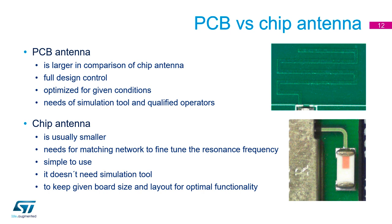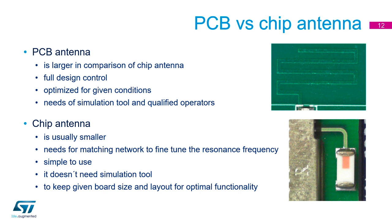Now we will discuss the possibilities in antennas — it is an often neglected component, although one of the most important. For PCB antennas, we mean dipole or F antennas, not those that require a ground plane under patch elements. It is very difficult to say whether it is preferable to use a chip antenna or a PCB antenna. Each has its pros and cons. The PCB antenna will always be slightly larger due to the dielectric constant of the substrate. However, it can be optimized for given conditions of use and can be placed in non-standard positions. Even a metallic or absorptive surrounding can be compensated, though this requires an appropriate simulation tool and qualified operators.